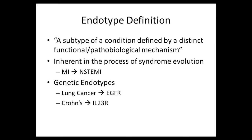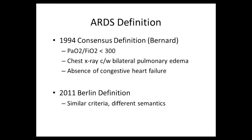I believe this concept is inherent in the process of syndrome evolution. For example, when thinking about how myocardial infarction has evolved, when I learned about it in medical school it was symptoms and EKG changes. Then different biological markers were added, and those markers took on a life of their own, creating things like non-ST segment elevation MI. Genetic endotype work is also underway in lung cancer looking at the EGFR receptor, and in Crohn's disease with the IL-23 receptor.